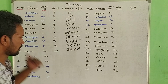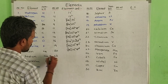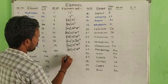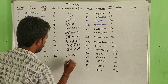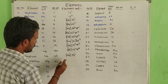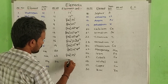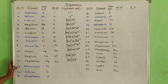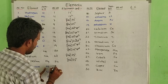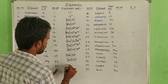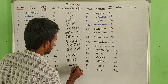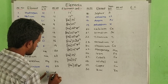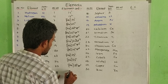Next: sodium, atomic weight 23 — written as [Ne] 3s1. Next: magnesium, atomic weight 24 — [Ne] 3s2. Next: aluminum, atomic number 13, symbol Al, atomic weight 27 — electronic configuration [Ne] 3s2 3p1.